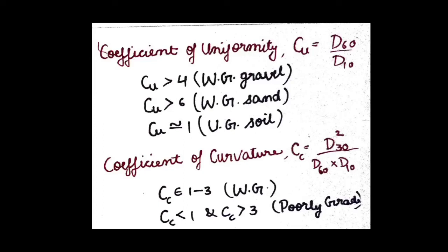Hello everyone, welcome to short video series of Study Era. In this video we will see the coefficient of uniformity and coefficient of curvature formulas. Cu equals D60 divided by D10, and Cc equals D30 squared divided by D60 times D10.